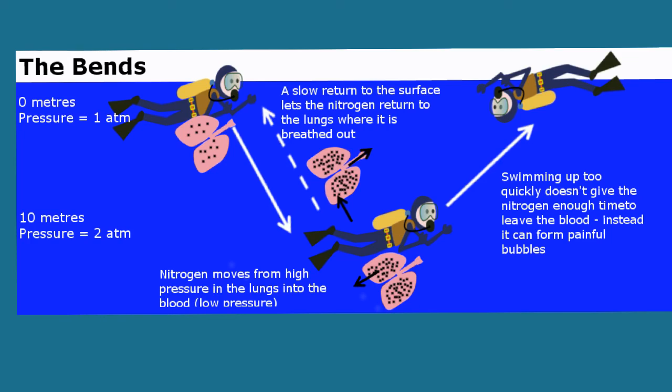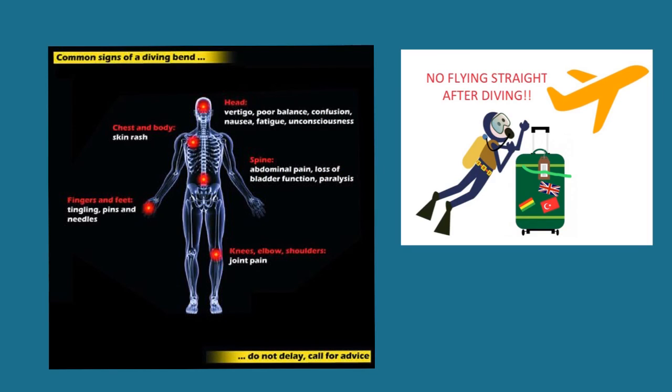However, if he swims up too quickly, then what will happen is that the nitrogen is still stuck in his tissues. It's stuck in his brain. It's stuck in his joints. So as he comes up, it produces a very painful condition known as the bends. Another term for the bends is decompression sickness. It is characterized by skin rash, vertigo, poor balance, confusion, nausea, fatigue, abdominal pain, and joint pain.